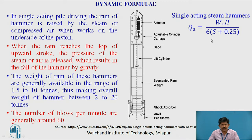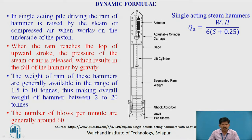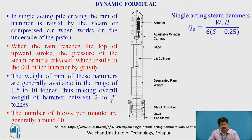For a single-acting steam hammer, the formula is: QA = W·H / (6·(S + 0.25)). In single-acting pile driving, the ram of the hammer is raised by steam or compressed air acting on the underside of the piston. When the ram reaches the top of the upward stroke, the steam pressure is released and the hammer falls by gravity. Ram weights range from 1.5 to 10 tons, making the overall hammer weight 2 to 20 tons, with typically around 60 blows per minute.